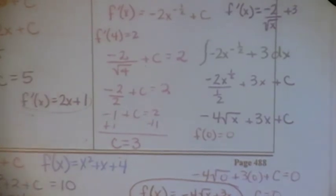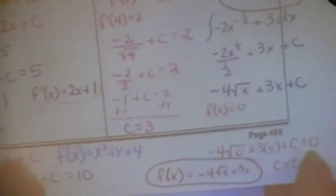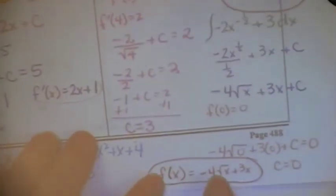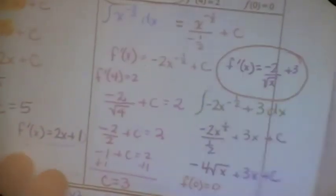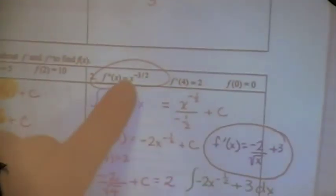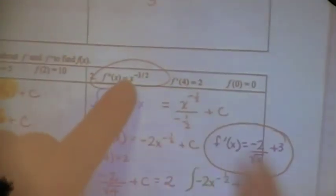So there's all three: the original function, the first derivative, and the second derivative. We started from the second derivative and worked all the way back to the original function using the anti-derivative.